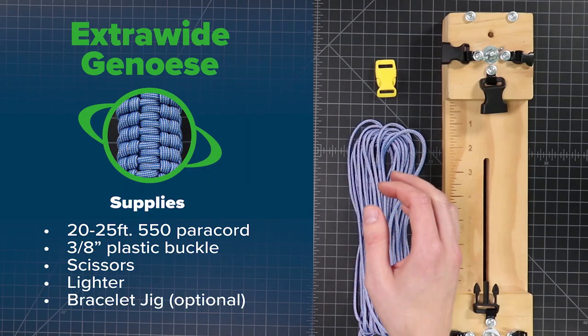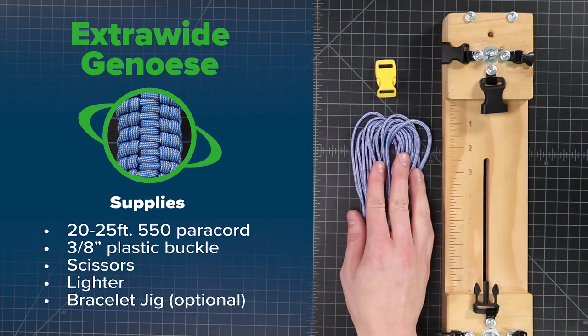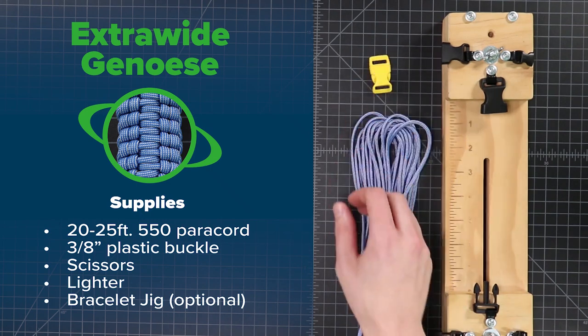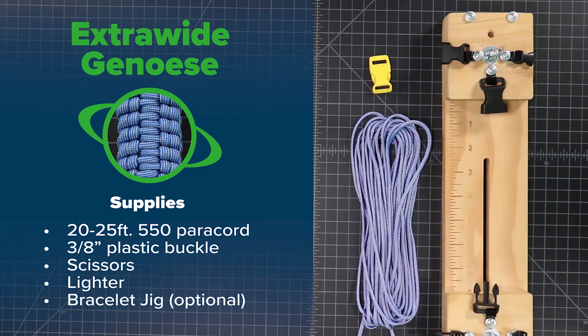For this bracelet, you're going to need about 25 feet of paracord, a 3⅛ inch buckle, and I'm going to be using a jig. Let's dive right in.